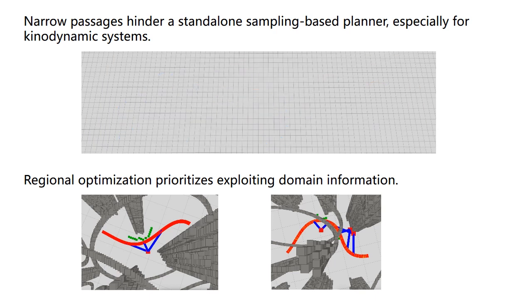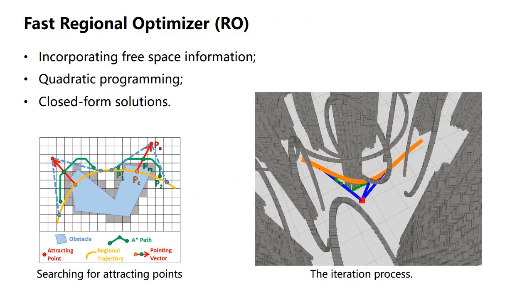Regional optimization, however, prioritizes exploiting domain information and thus can help with it. We propose a fast regional optimizer that incorporates nearby free space information by searching for attracting points to guide the trajectory deformation, which still maintains a closed-form solution and thus finishes quickly.